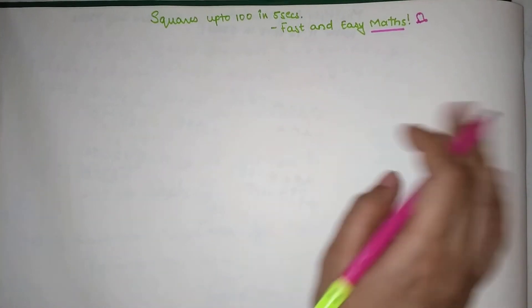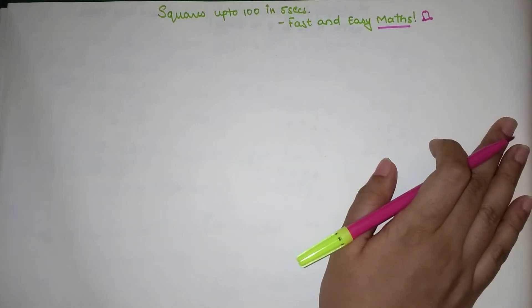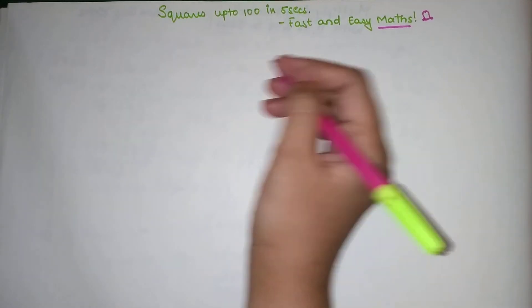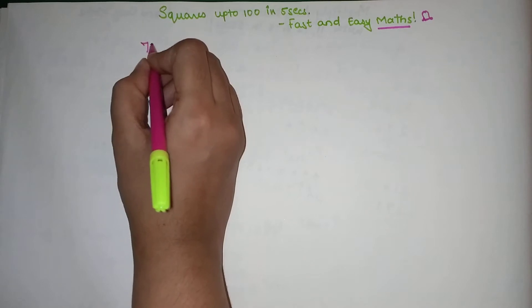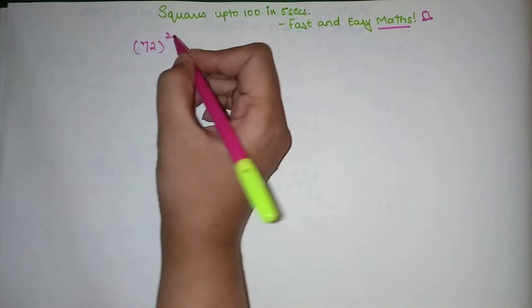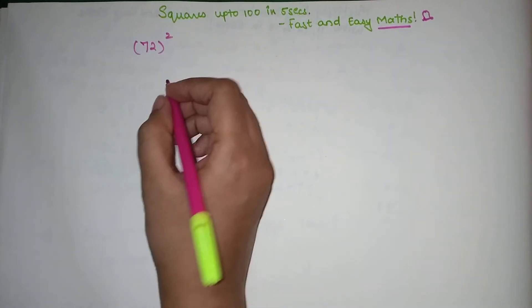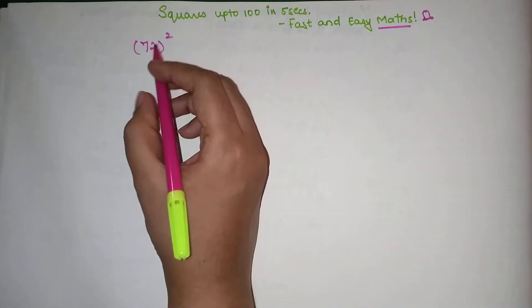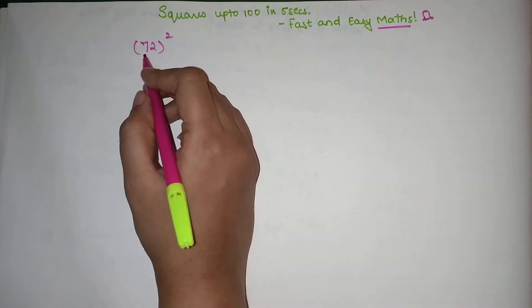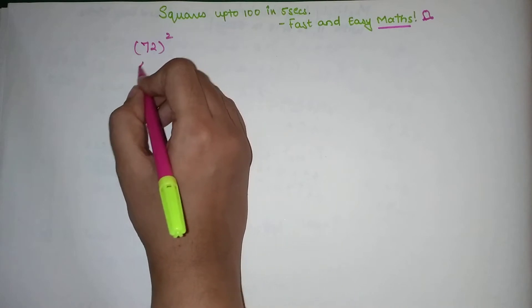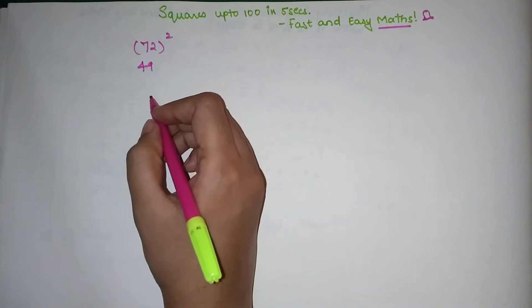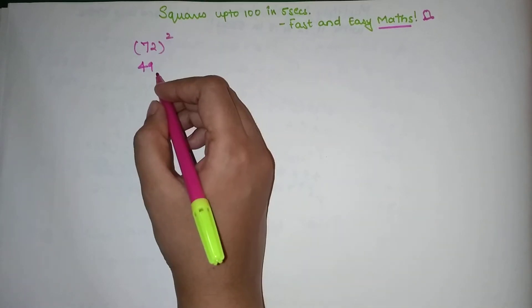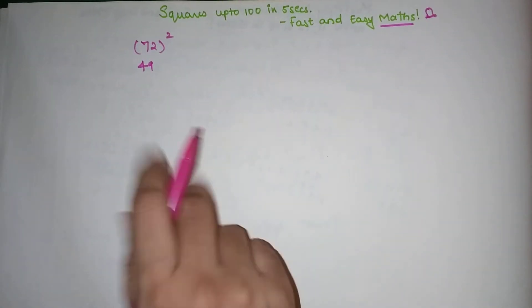Let's go ahead. First, let's take any number — let's take 72 — and you are supposed to find the square of 72. First things first, you write the square of 7, which is 49. Then the square of 2 is 4.